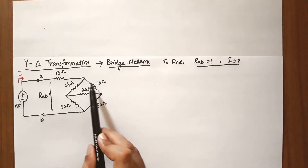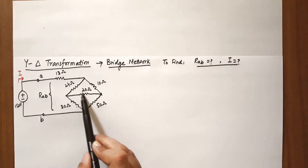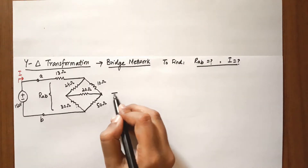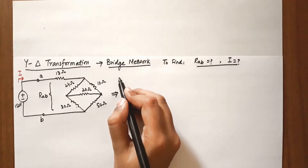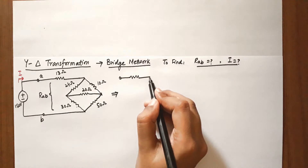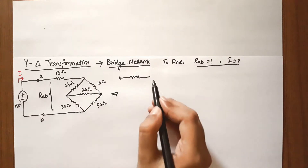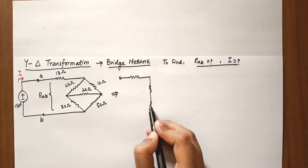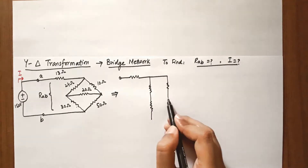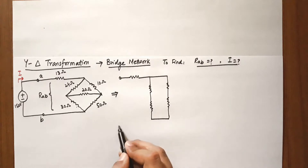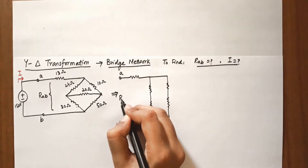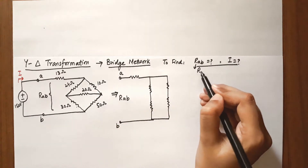Now, 24 ohm and 30 ohm resistances appear to be in series, but in between there is a 20 ohm resistance connected, so we don't know if this is in series or in parallel. Let us draw these resistances in a simplified form. The 24 ohm and 30 ohm resistances are both connected, and the 10 ohm and 50 ohm resistances are both connected. These are terminals A and B, and we have to find Rab, which is the equivalent resistance.